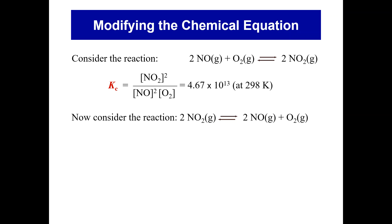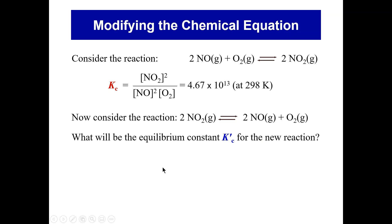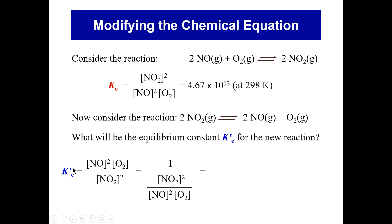Let's look at this equation, which, if you compare it to the original equation, you'll see that it's the reverse. We're going to look at the relationship between the Kc for this equation and the Kc for the original equation. If we write down the Kc expression for this equation — we'll call it Kc prime — it equals the concentration of NO squared times the concentration of O2 divided by the concentration of NO2 squared.